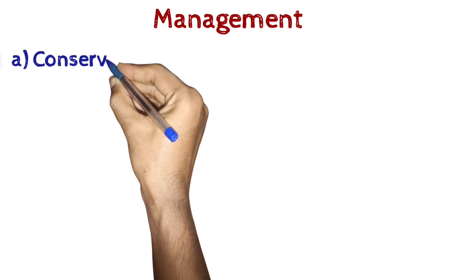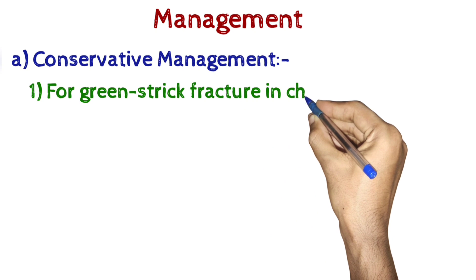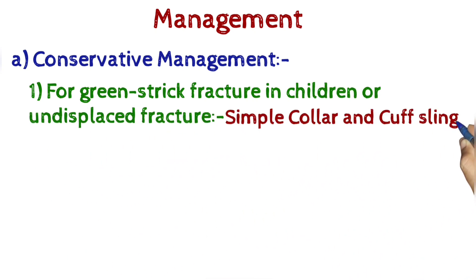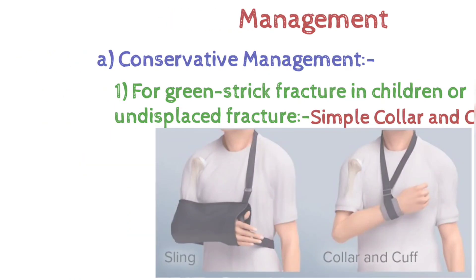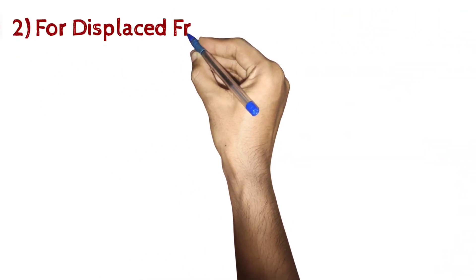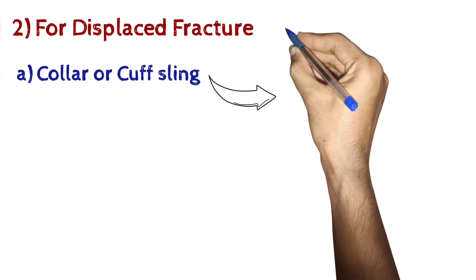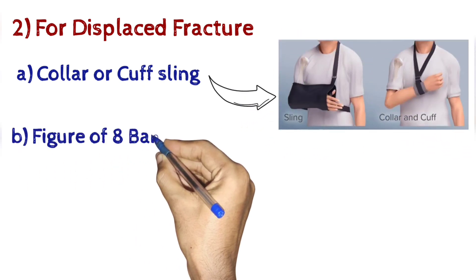Management - Conservative management: 1. For greenstick fracture in children or undisplaced fracture, simple collar and cuff sling. 2. For displaced fracture, collar or cuff sling with figure of eight bandage.